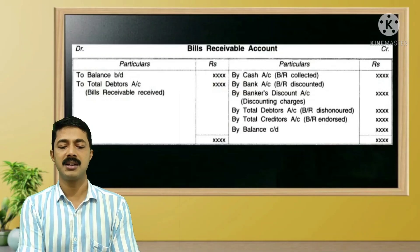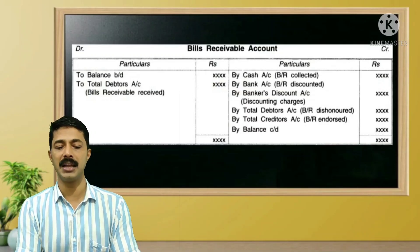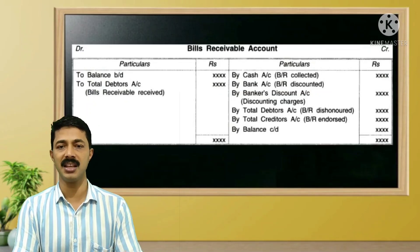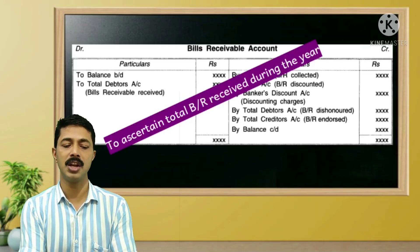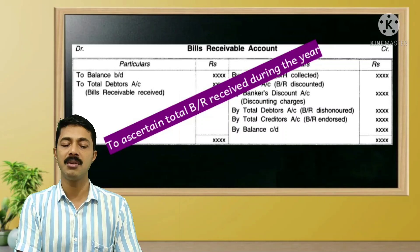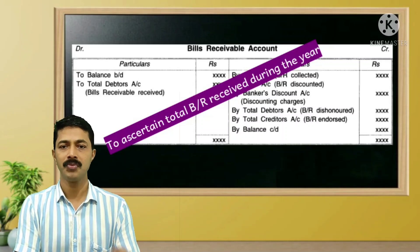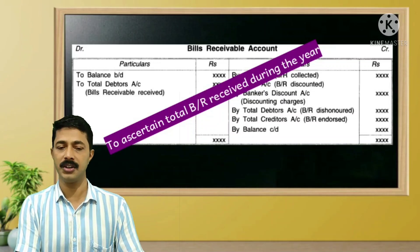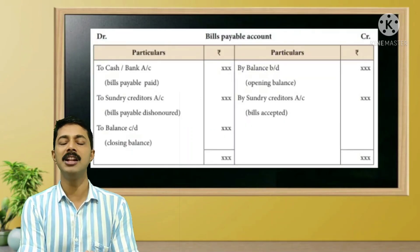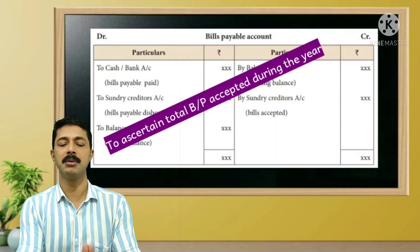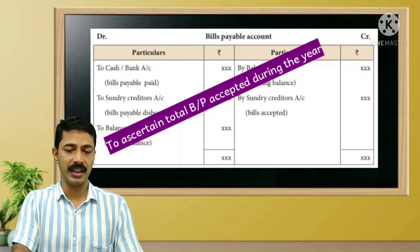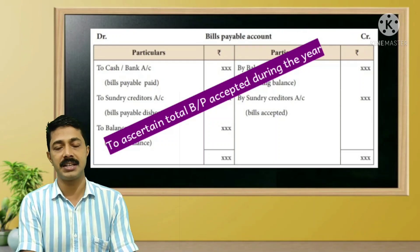Then we have to prepare the bills receivable account. The bills receivable account is used to ascertain the total bills receivable received during the year. We also prepare the total debtors account and total creditors account.